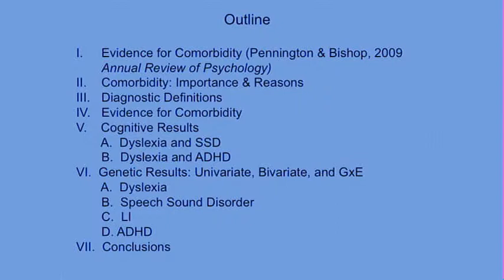As we study individual disorders, we have to think about why they're related to other disorders. This is true for autism, which is comorbid with attention problems, anxiety, and OCD. It's true for dyslexia and for lots of psychiatric disorders. One of the things we're learning from breakthroughs in genetics and imaging is that there are some shared underlying pathways that help produce these comorbidities.